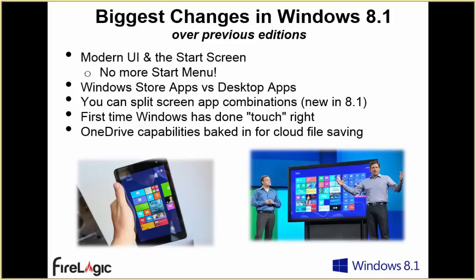Some of the biggest things that have changed in Windows 8 over previous versions: there's a start screen — there's no more start menu. In Windows 10 the start menu is coming back in a different form, so the start screen won't be here forever, but for now in Windows 8 the start screen is our primary app interface. Windows Store apps versus desktop apps — there's now a notion of applications you get from the Windows Store, similar to what you'd get on an iPad or Android tablet, alongside traditional apps like QuickBooks and Office.